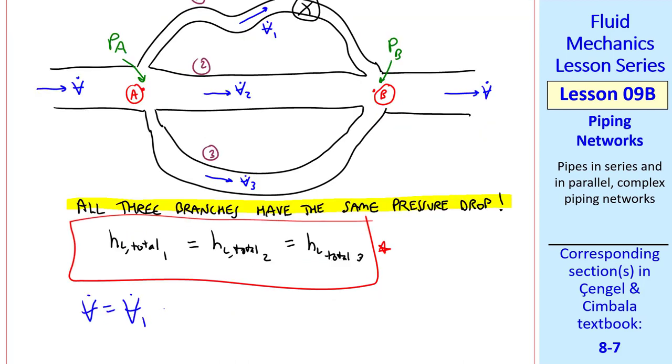By conservation of mass, we also know that V dot is V dot 1 plus V dot 2 plus V dot 3.